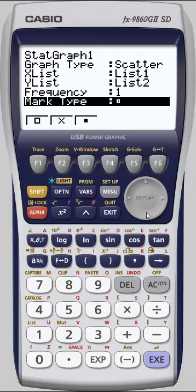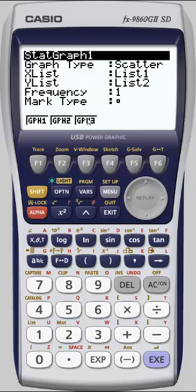Now, what if I want to adjust Stat Graph 2? I would move to the top to highlight this, and then I would press F2 to change the setting window to Stat Graph 2 settings, and you can adjust these likewise for Stat Graph 3.